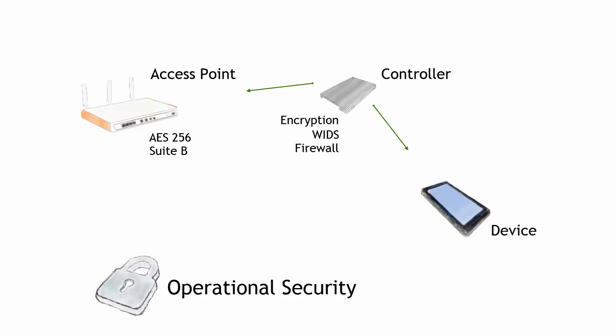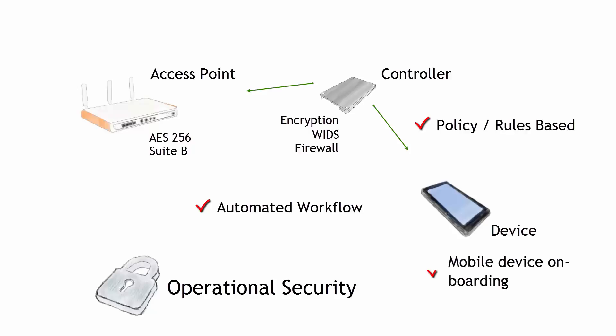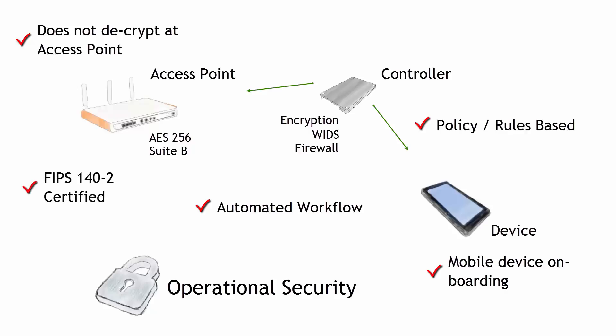We have to have what we call operational security within our wireless environment. There are some features and functions you want to watch out for. You need an environment that allows you to do policies based on rules, an automated workflow that allows you to do mobile device onboarding, quarantine activities — all of these to keep your environment secure, stable, and repeatable. You need access points that don't require decryption and that are FIPS 140-2 certified, and a controller to relieve workloads from the access points. All of these things represent what a good wireless strategy should have.